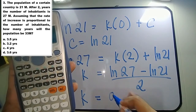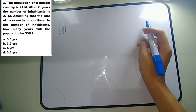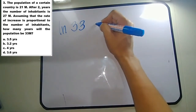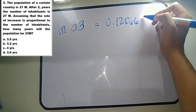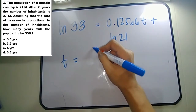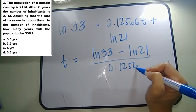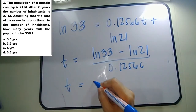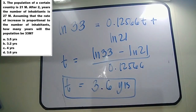For the final answer, ln(p) equals kt plus c. With p equal to 33 million, we have ln(33) equals 0.12566 times t plus ln(21). Solving for t, we get t equals (ln33 minus ln21) over 0.12566, which is approximately 3.6 years. So after approximately 3.6 years the population will grow from 21 million to 33 million.